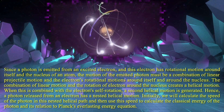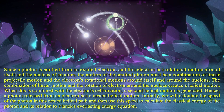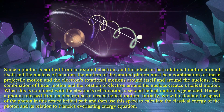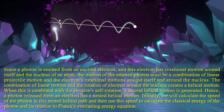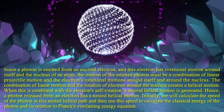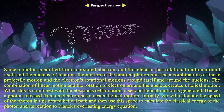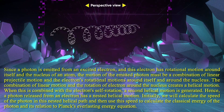Since a photon is emitted from an excited electron, and this electron has rotational motion around itself and the nucleus of an atom, the motion of the emitted photon must be a combination of linear projectile motion and the electron's rotational motions around itself and around the nucleus. The combination of linear motion and the rotation of the electron around the nucleus creates a helical motion. When this is combined with the electron's self-rotation, a second helical motion is generated.